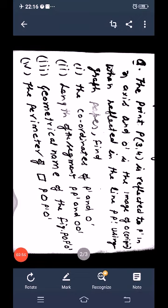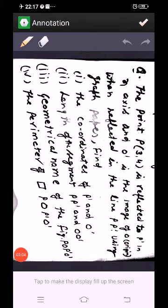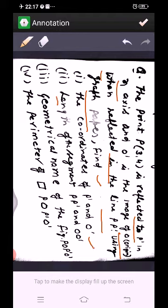Let us take one more question. The point P(3,4) is reflected to P' in the x-axis, and O' is the image of O (the origin) when reflected in the line PP'. Using graph paper, find the coordinates of P' and O', length of the segments PP' and OO', and the geometrical name of figure POP'O'.